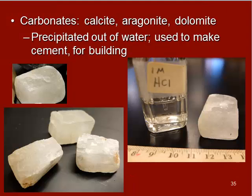Next we have carbonates. Carbonates have calcium and oxygen. Examples include calcite, aragonite, and dolomite. These precipitate out of water, and we use them to make cement for building.